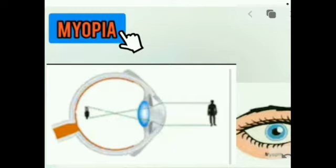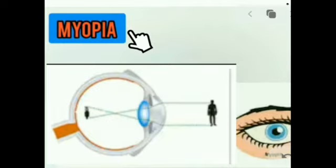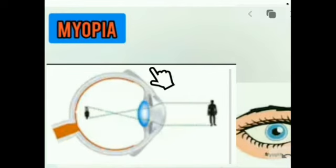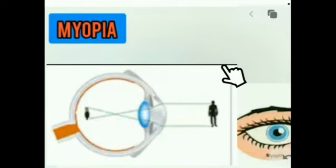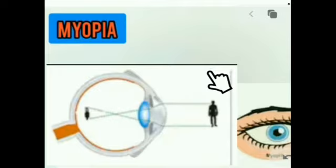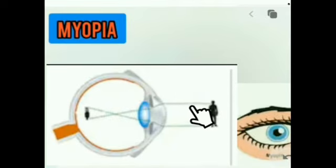The first defect is myopia, or short sightedness. For a normal eye, the far point is infinity, but for a myopic person, this far point is not infinity. When the object is at infinity, the image is formed in front of the retina instead of on it. Myopia means a person can see near objects clearly but is not able to see distant objects. His near point is 25 cm, but his far point is not infinity.